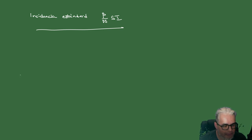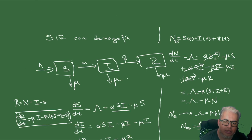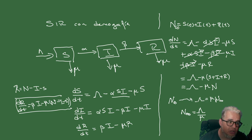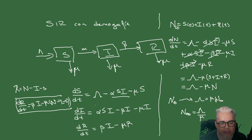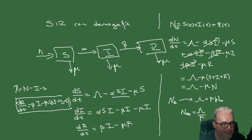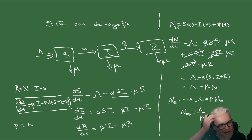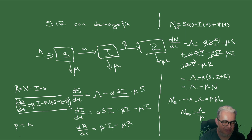Una cosa más: en muchos libros, cuando presentan este modelo, hacen un truco que es tomar mu igual a Lambda. Eso equivale a decir que no hay efectos demográficos netos, porque todo lo que entra se vuelve a ir. Dependiendo de la enfermedad, Lambda puede ser propiamente la tasa de natalidad o simplemente la tasa de llegada de nuevos individuos susceptibles.